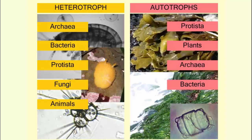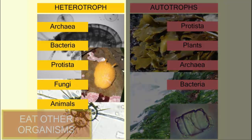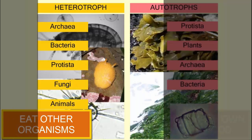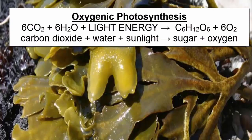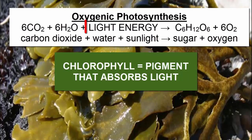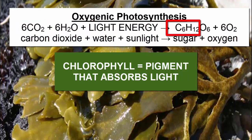All living organisms can be classified as autotrophs or heterotrophs. Heterotrophs acquire their food by eating other organisms. Autotrophs make their own food, usually through a process called photosynthesis. Photosynthesis uses the pigment known as chlorophyll to capture light energy from the Sun, which it then uses to combine abundant surrounding molecules like carbon dioxide and water to synthesize sugar molecules.